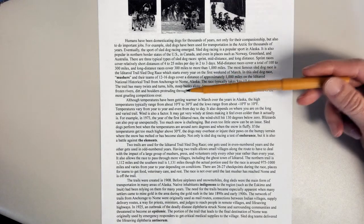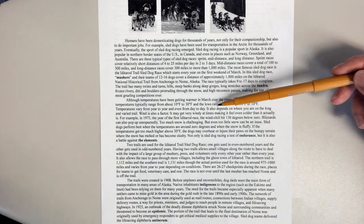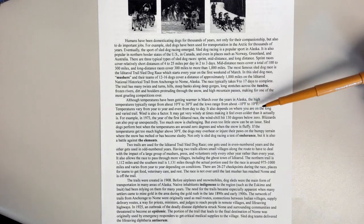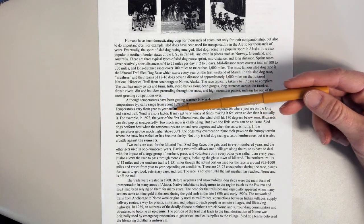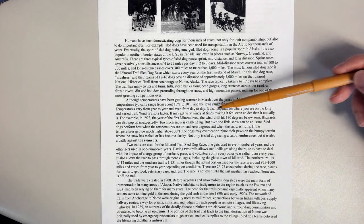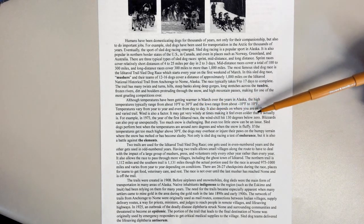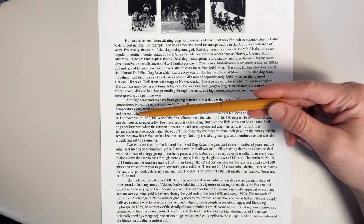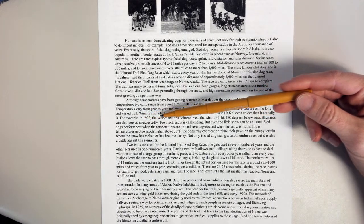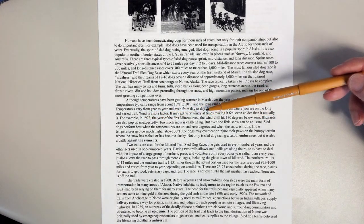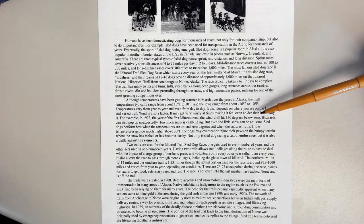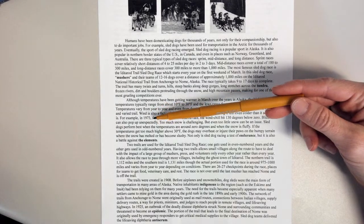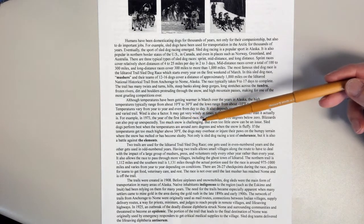Temperatures vary from year to year and even from day to day. It also depends on where you are on the long and varied trail. Wind is also a factor. It may get very windy at times, making it feel even colder than it actually is. For example, in 1973, the year of the first Iditarod race, the wind chill hit 130 degrees below zero.